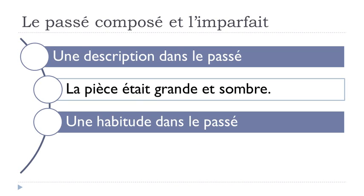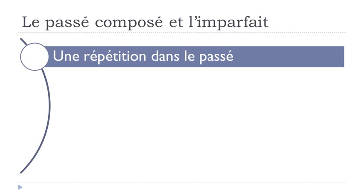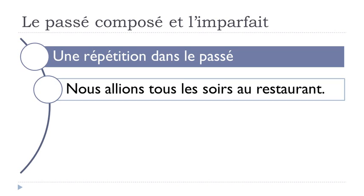The second use will be une habitude — a habit or something you are used to doing — une habitude dans le passé. The example: 'je partais le matin à 8 heures.' In that case, you want to insist on the fact that it's something you tend to do every morning. Not so far from this habit concept is une répétition dans le passé — something that repeats or repeated itself in the past, in which case you should use l'imparfait.